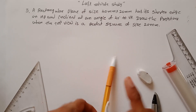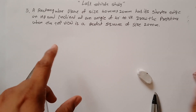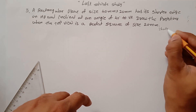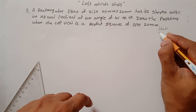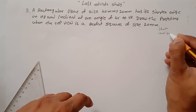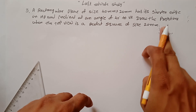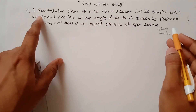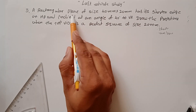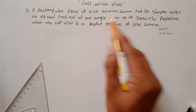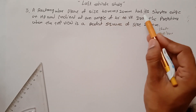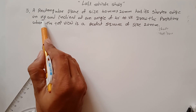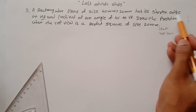Problem number three from projection of planes. The first step is to find out the shape of the plane, where it is resting, and how it is resting. The shape is a rectangular plane with dimensions given, and it is resting on HP with its shorter edge.